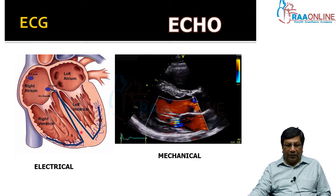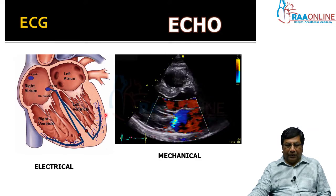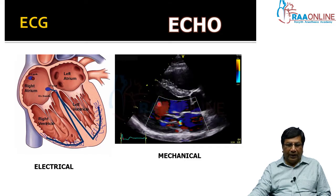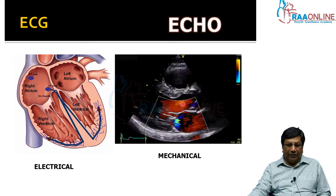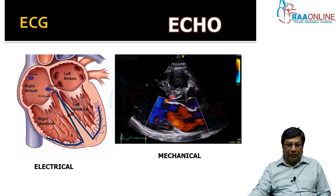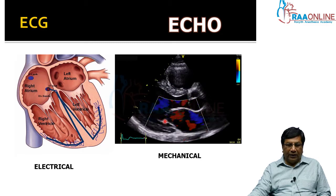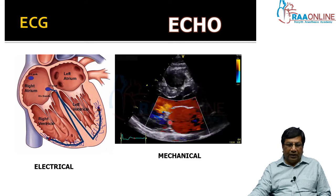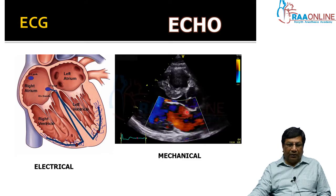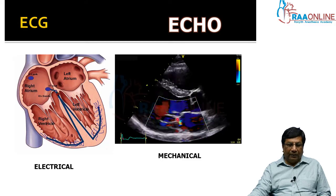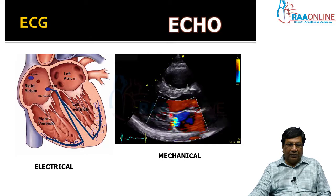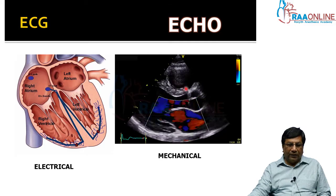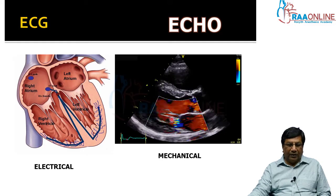This is the information you get from the electrocardiogram, whereas the echocardiogram gives you the mechanical information of the heart — how the heart is contracting and relaxing, what the intracardiac dimensions and pressures are, whether the valves are opening normally or abnormally, whether valves are causing obstruction or leakage, and what the intracardiac pressures are.